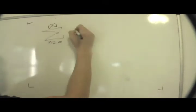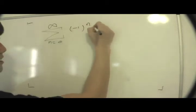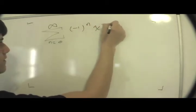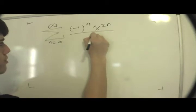So the first thing I'm going to start with is a series: n equals 0 to infinity, minus 1 to the power of n, x to the 2n over 3 to the n.